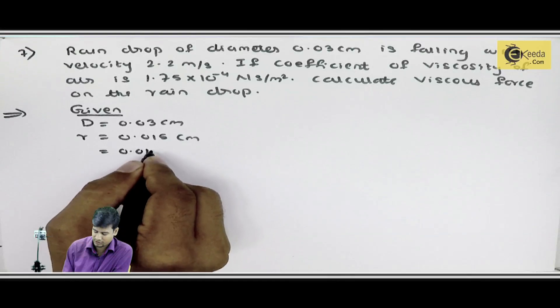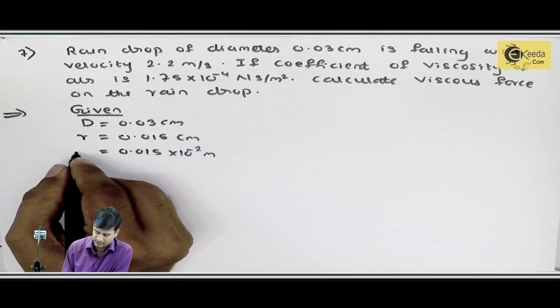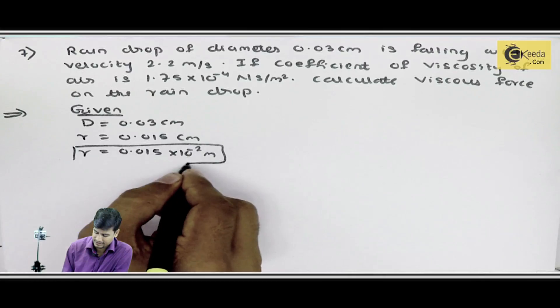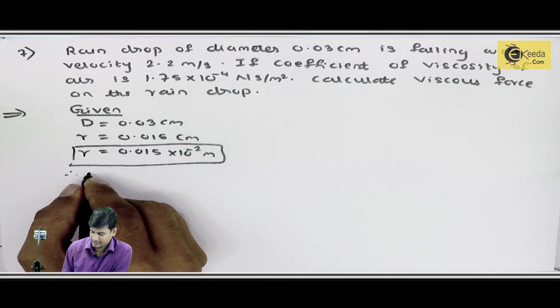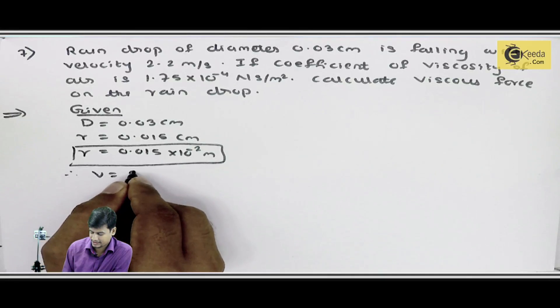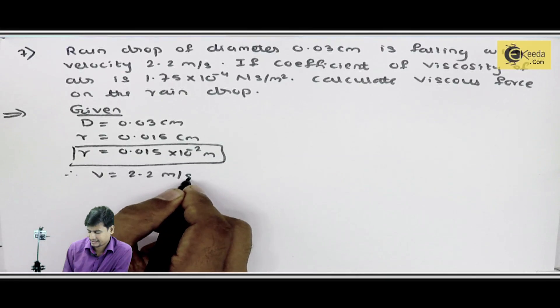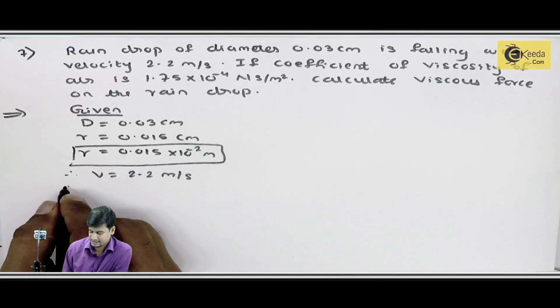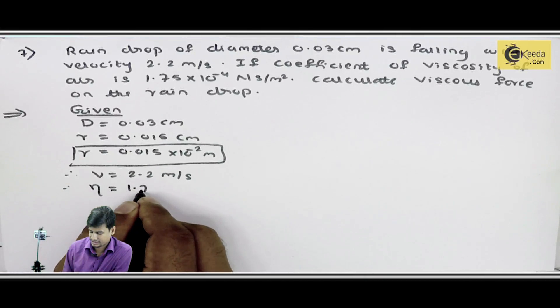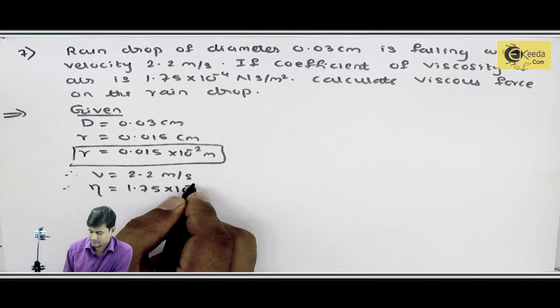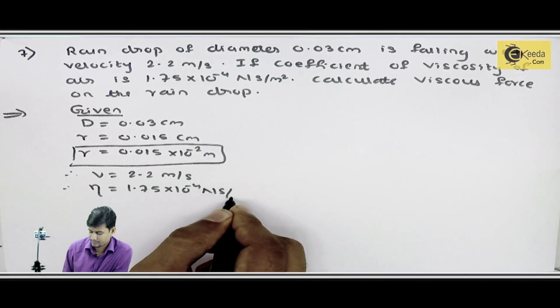So, this is 0.015 into 10 raise to power minus 2 meter. Yeh mujhe r me liya. R ka conversion me liya. Next, mujhe given term hai velocity. Velocity diya 2.2 meter per second. And next, mujhe coefficient of viscosity diya hai, eta 1.75 into 10 raise to power minus 4 newton second per meter square.